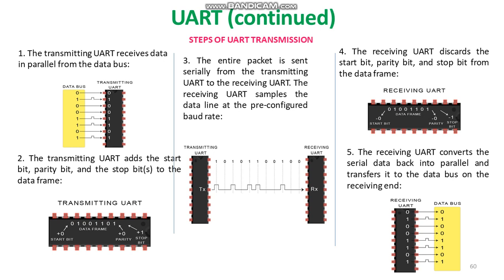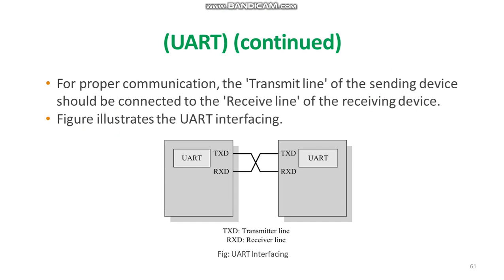These are the five steps involved in UART transmission. For proper transmission, the transmit line of the sending device should be connected to the receive line of the receiving device, as shown in the diagram — that is UART interfacing. Along with serial data transmission, UART provides handshaking signal support for controlling serial data flow. UART chips are available from different semiconductor manufacturers. Nowadays, most microprocessors or microcontrollers have integrated UART functionality and provide built-in instruction support for serial data transmission and reception.